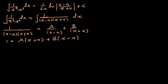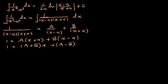We multiply each fraction to make the denominators equal and then compare numerators. Expanding and grouping the x terms gives us A plus B times x, and grouping the constant terms gives us A minus B times a. You can pause the video to verify this expansion step.